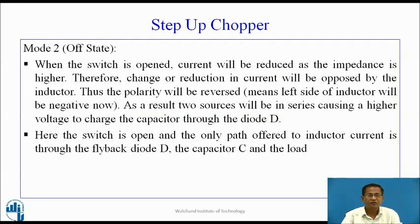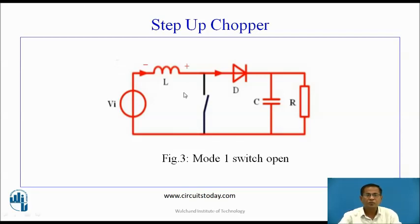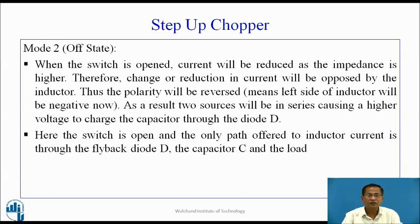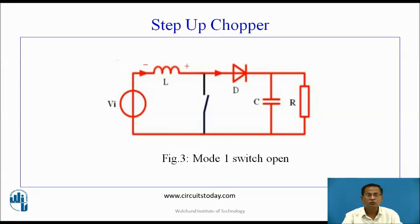Mode 2 — Off state. When the switch is opened, the current will be reduced as the impedance is higher. Therefore, the reduction in current will be opposed by the inductor. Thus, the polarity will be reversed: the left side of the inductor will be negative and the right side will be positive. As a result, the two sources will be in series, causing a higher voltage to charge the capacitor through the diode. In this duration, the chopper switch is non-conducting, so current flows through the input voltage source, L, diode D, and the load. The switch is open and the only path for inductor current is through flyback diode D, capacitor C, and the load. This is the circuit diagram for Mode 2 with the switch open.